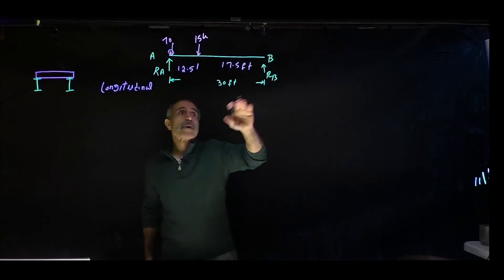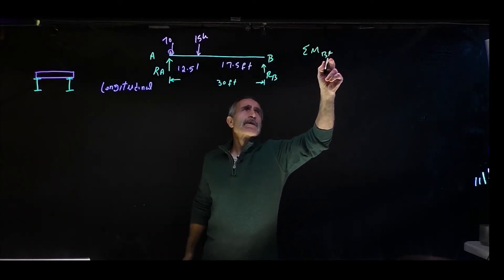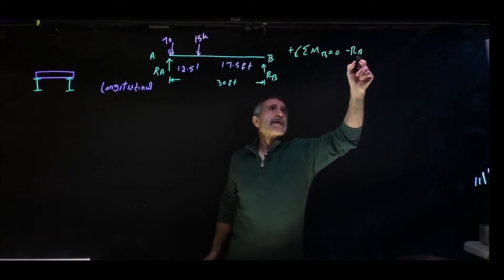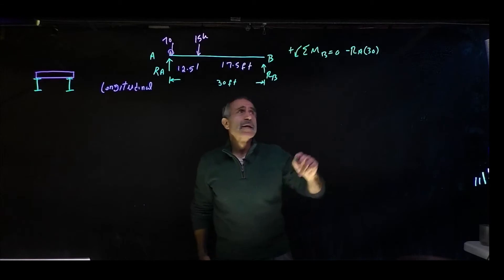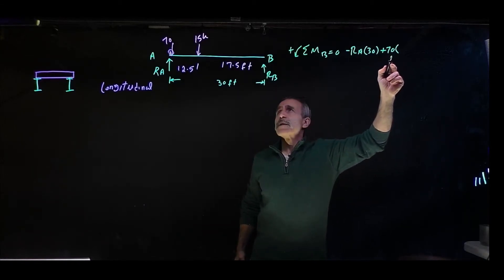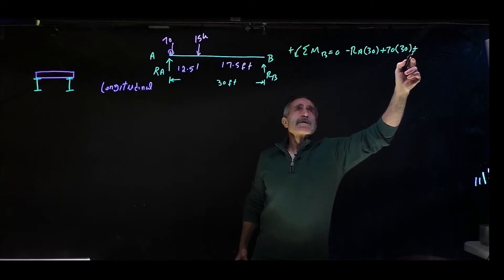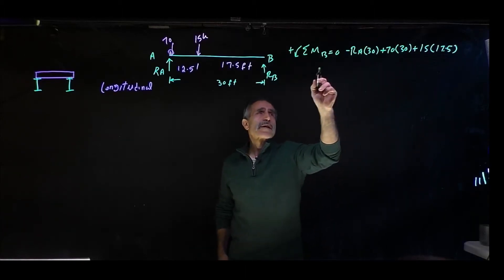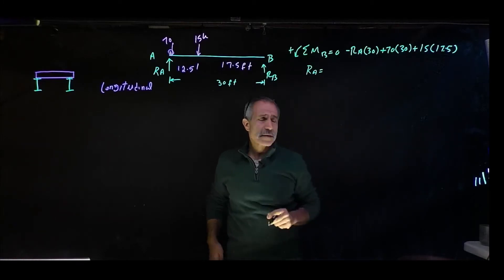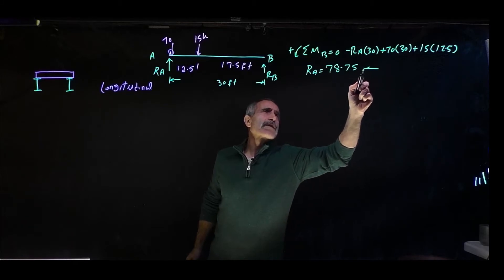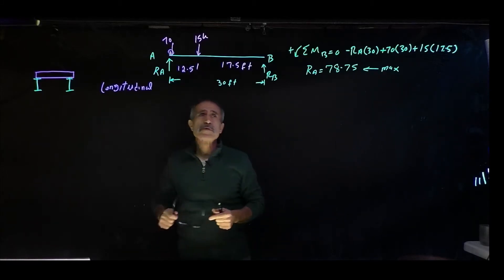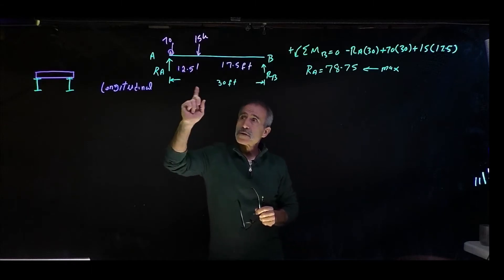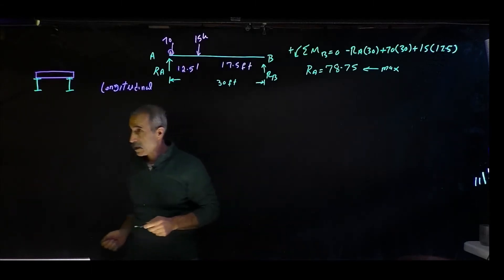Taking a summation of moments about point B, counterclockwise positive: minus RA times 30, plus 70 times 30, plus 15 times 17.5 equals zero. Solving, RA comes out to 78.75 kips. This is the maximum reaction. Checking with summation of FY: RB equals 85 minus 78.75, which is not the maximum. So 78.75 kips controls.